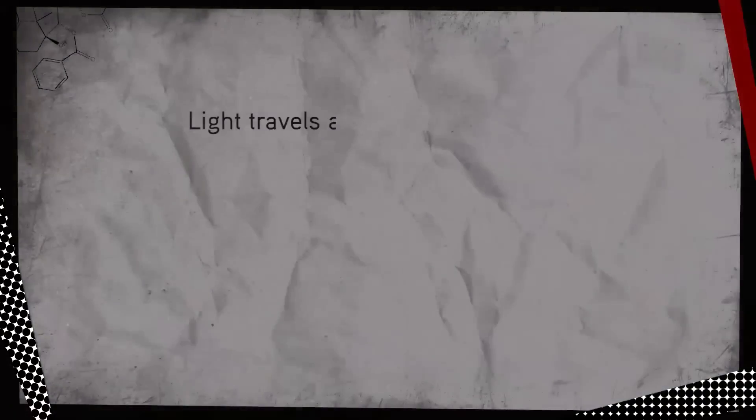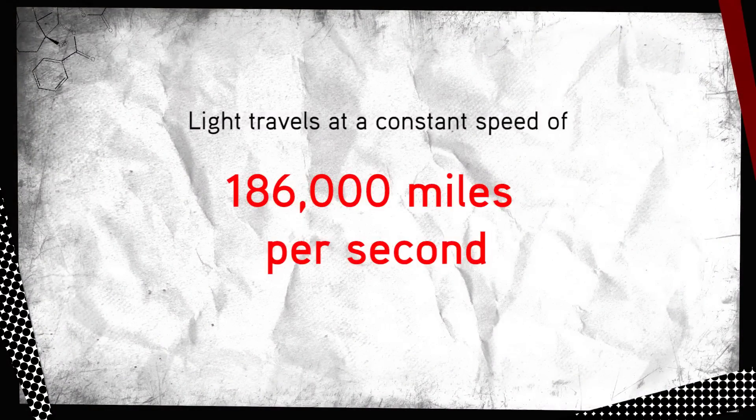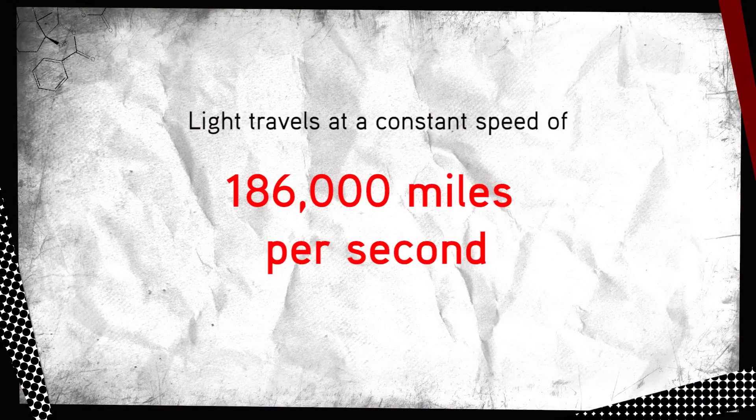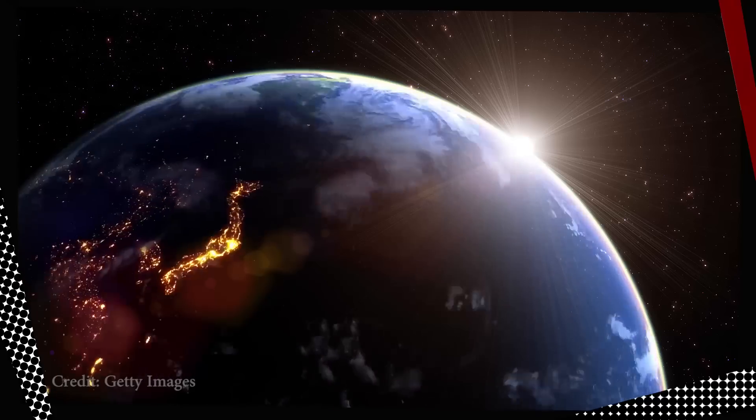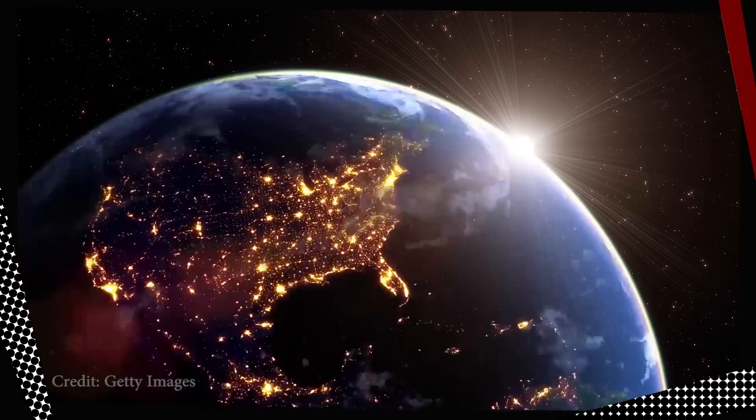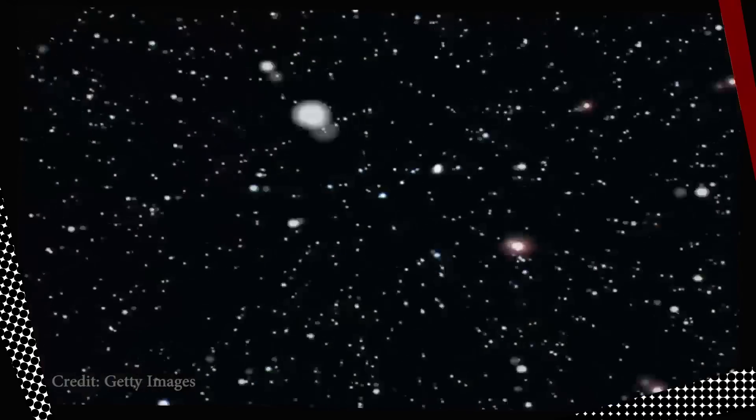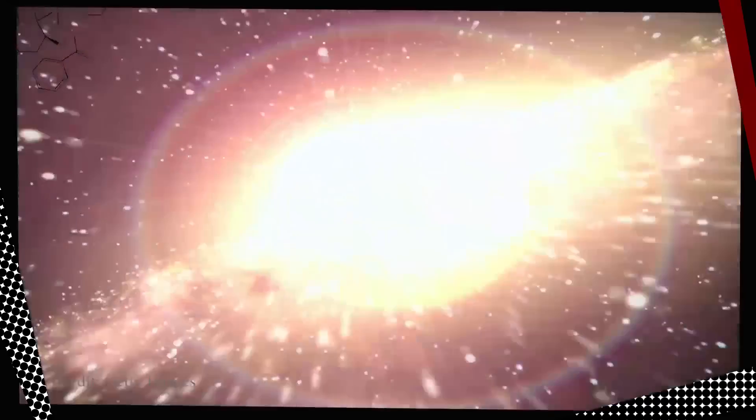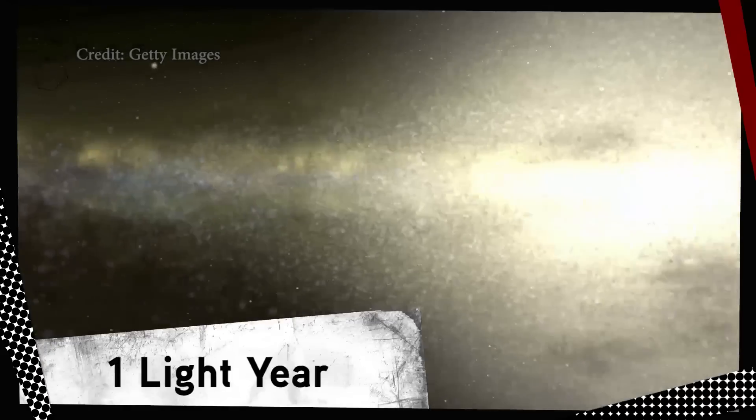See, light travels at a constant speed of 186,000 miles per second. That's fast! At that speed you could circumnavigate the Earth's equator seven and a half times in a single second. You could travel six trillion miles in one year. And there's even a name for that. It's one light year and it's the metric in which we measure the universe since space is so vast.